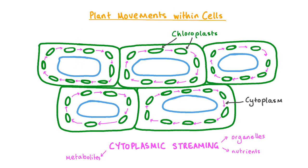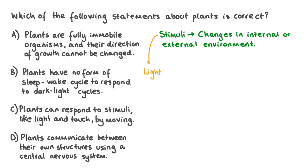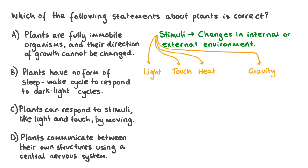Let's have a go at a couple of practice questions. Which of the following statements about plants is correct? Plants are fully immobile organisms and their direction of growth cannot be changed. Plants have no form of sleep-wake cycle to respond to dark-light cycles. Plants can respond to stimuli like light and touch by moving. Or plants communicate between their own structures using a central nervous system. Plants are capable of movement in response to stimuli like light intensity, touch, heat and gravity — and some plants can move via thigmatropism.